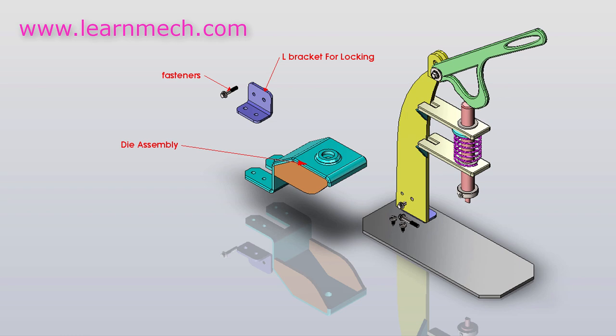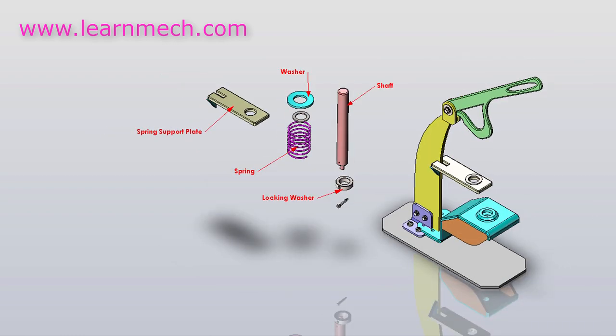The die assembly is the female part which can be changed according to the operation by simply removing nuts and bolts.